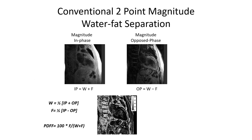Older methods utilize less input data. The two-point magnitude method utilizes two magnitude images — in-phase and opposed-phase — but fat fractions are limited in range to 50% fat fractions. Notice in this example how chest wall fat is artifactually mapped to a low fat fraction.